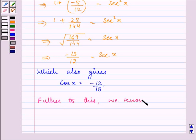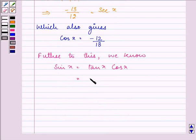we know that sin x = tan x × cos x. Let us substitute the value of tan x and cos x. On doing so, we have the value of sin x as -5/12 multiplied by -12/13.